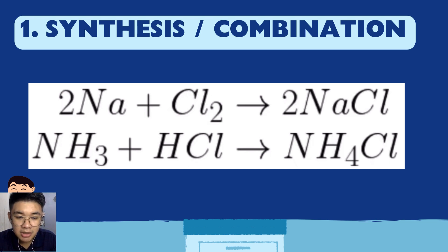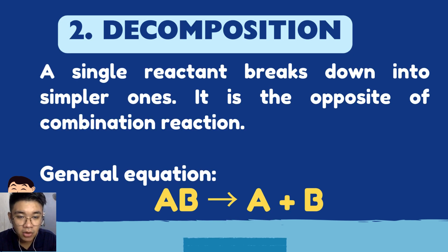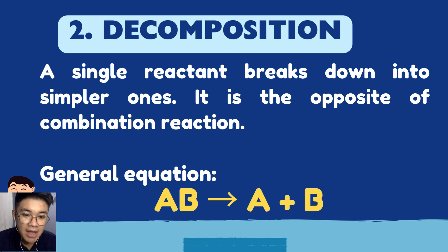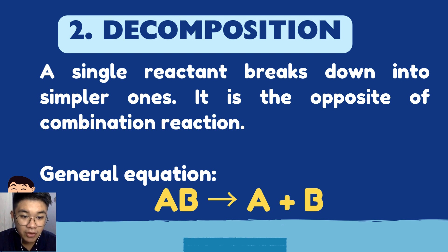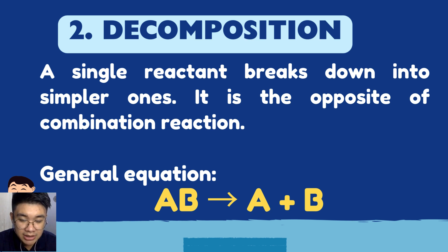The second type is decomposition reaction, which is the opposite of combination. From a single compound, it breaks down into its individual simpler substances. A decomposition reaction is where a single reactant breaks down into simpler products. The general equation is: AB → A + B.